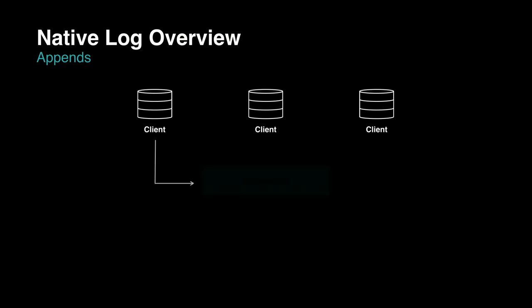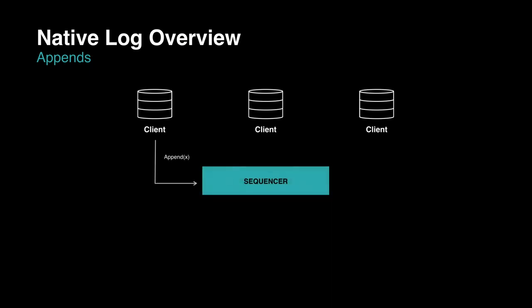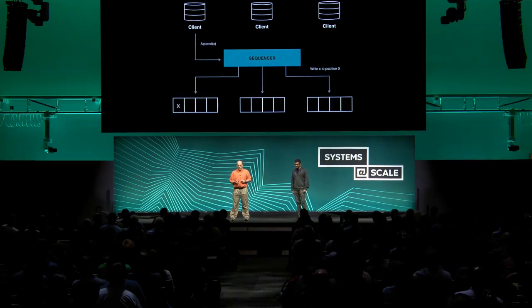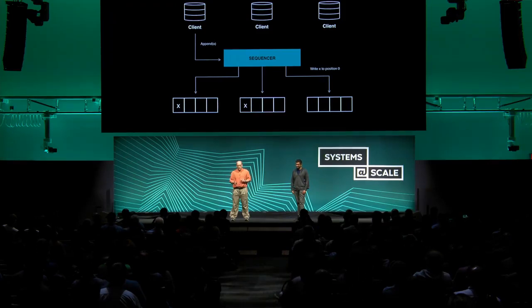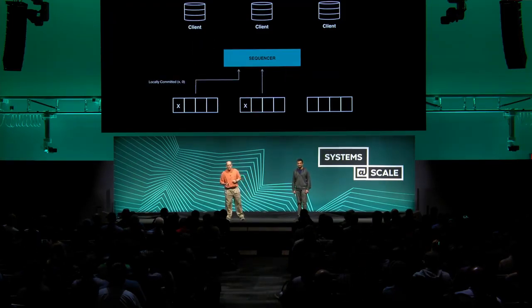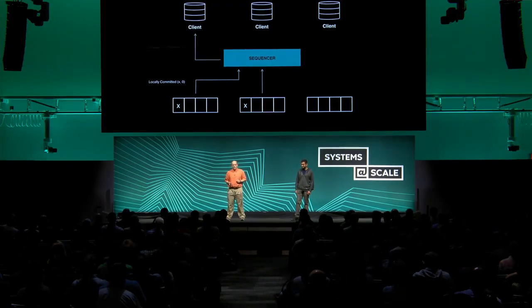There are really two basic operations in a shared log: you append to the end, and you play the log. For writes, this is going to look like a fairly basic quorum protocol. We have a primary called a sequencer. Each client wanting to append data sends it to the sequencer, which picks the position, farms it out to the replicas, and the replicas write it. When a replica writes it to its local disk, we say it's locally committed. Once a majority has committed, the sequencer replies back to the client — the data is globally committed.